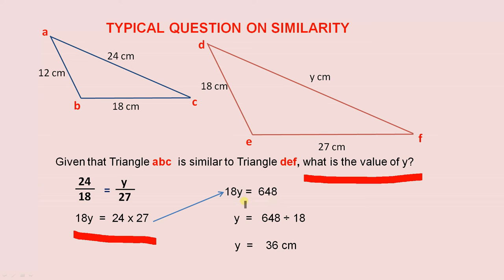So 18Y equals 648. We divide both sides by 18. So Y equals 648 divided by 18. So Y equals 36 centimeters. So because those two triangles are similar, Y is 36 centimeters.